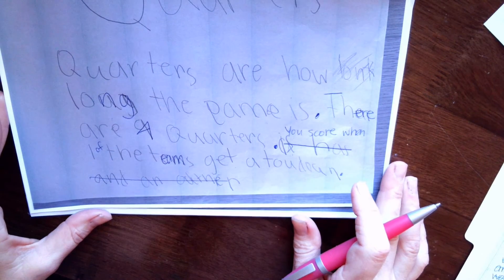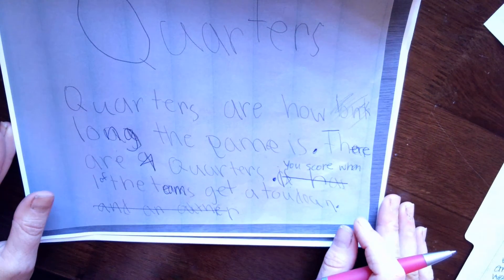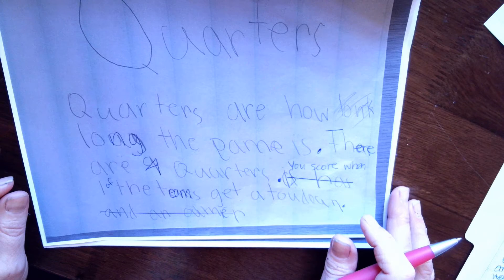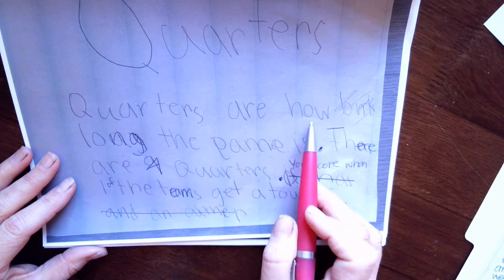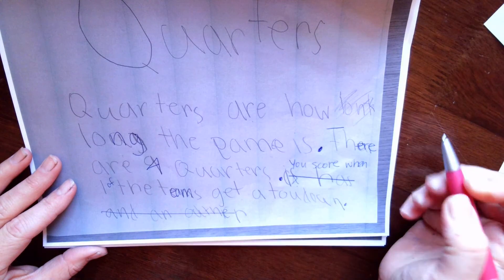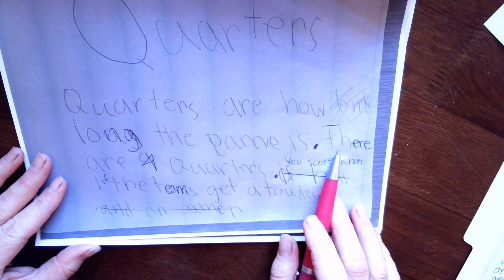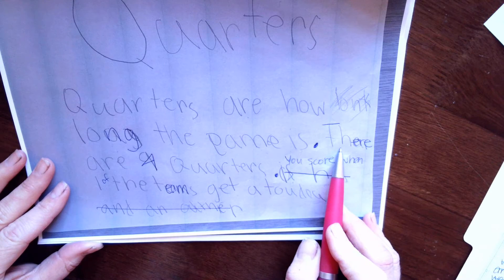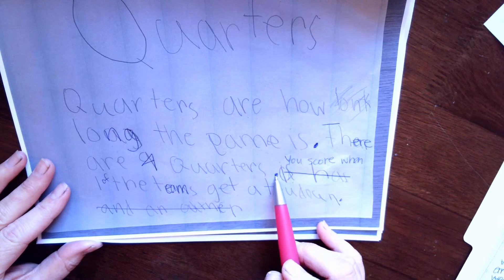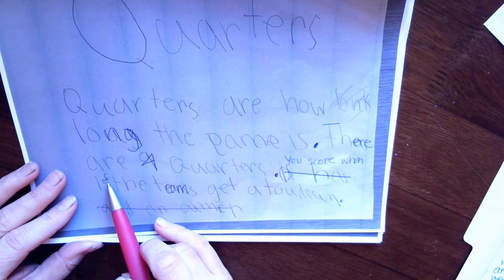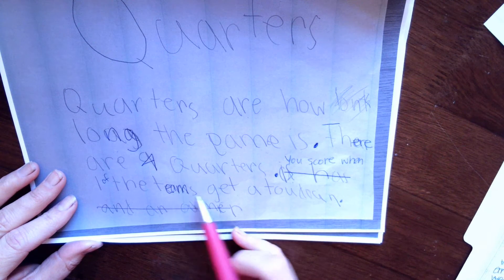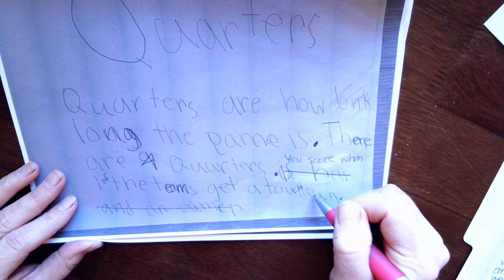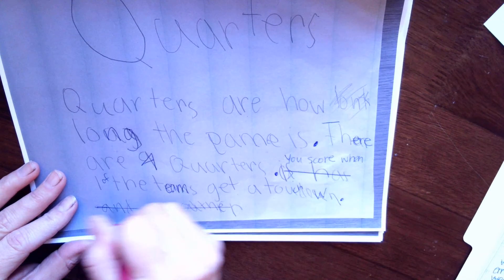Look for yours that looks like this and then you can correct it along with the video. Quarters are how long the game is, period. L-O-N-G is how we spell long. There are — you put nine quarters — four quarters, and there is T-H-E-R-E, period. You score when one of the T-E-A-M-S get a touch — T-O-U-C-H-D-O-W-N — period. And then we're going to cross this out.